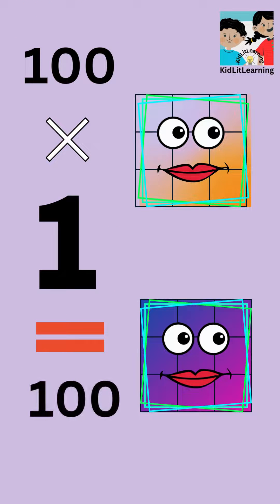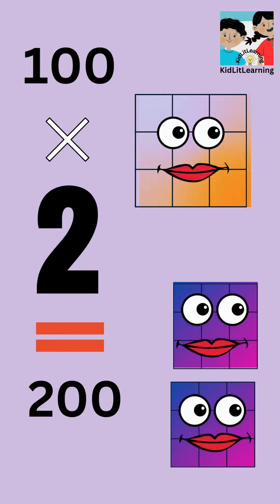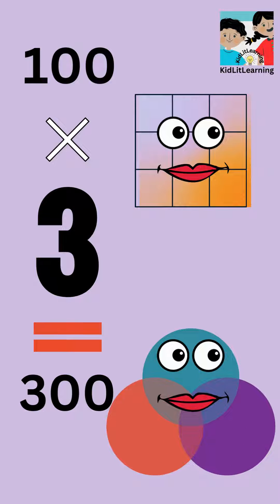100 times 1 is equals 100. 100 times 2 is equals 200. 100 times 3 is equals 300.